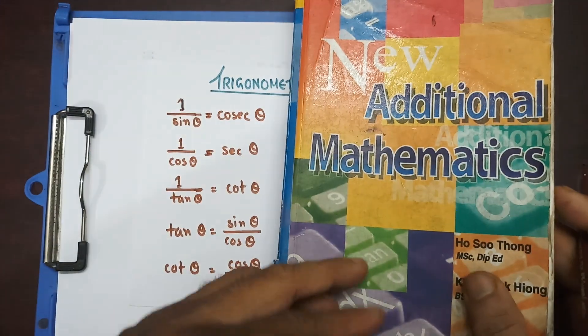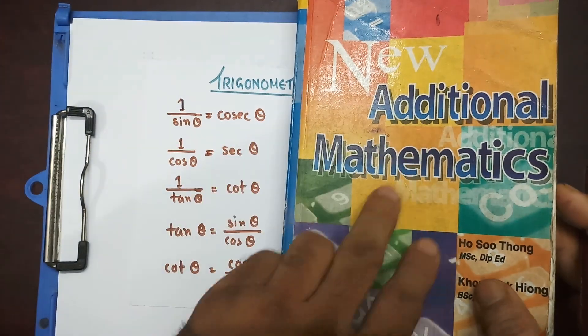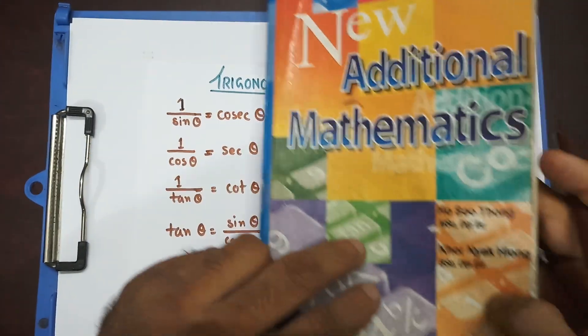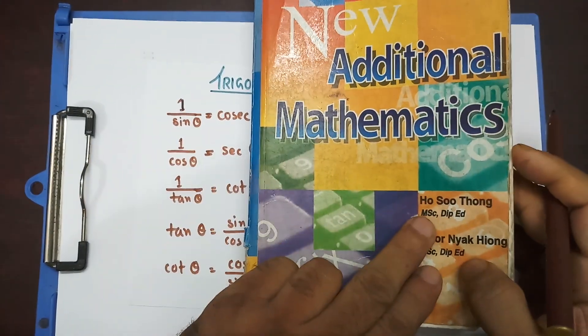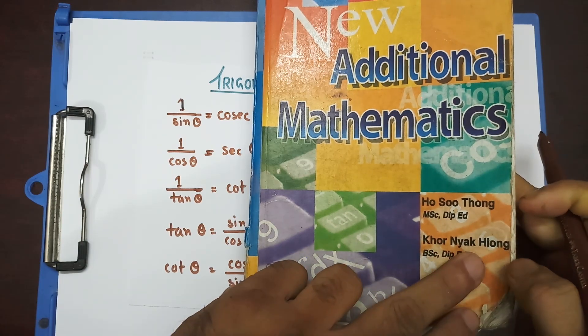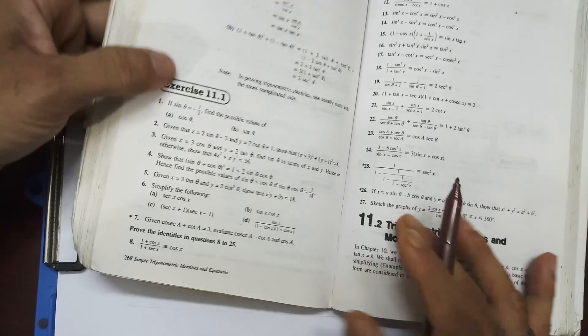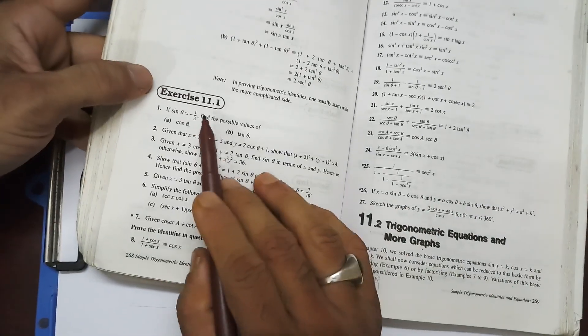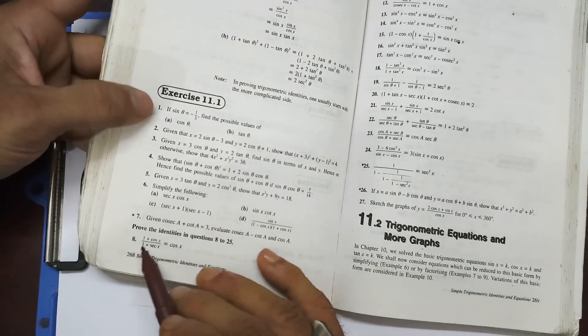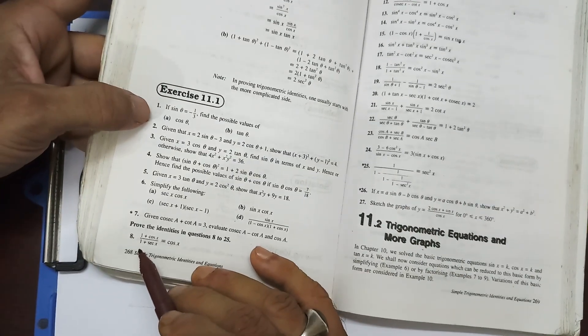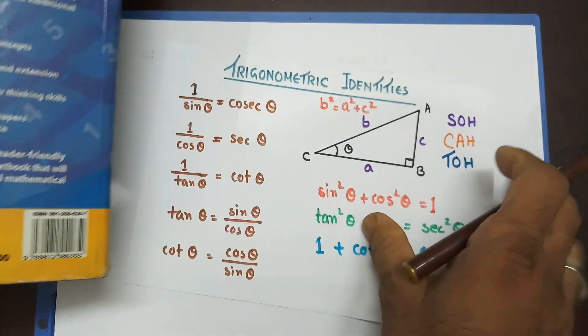What I'm going to do today is use this book, New Additional Mathematics, written by Ho Soo Thong and Khor Nayak Hiong. I'm going to prove some of the trigonometric identities from Exercise 11.1, questions number 8 to 25. Let's start.